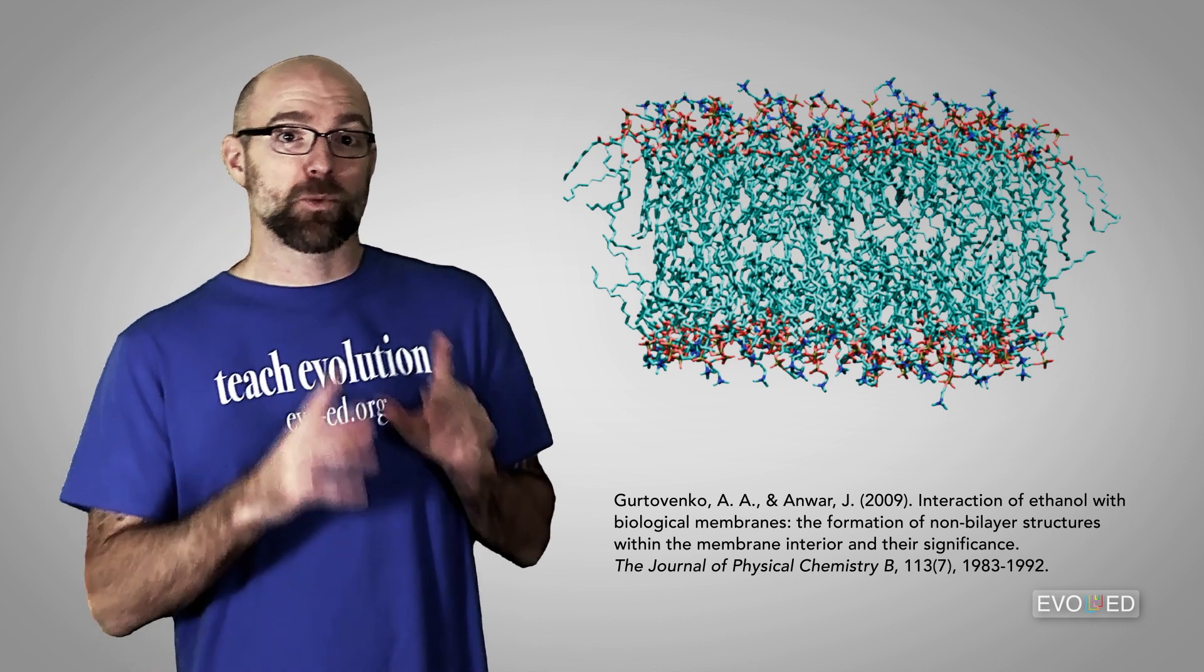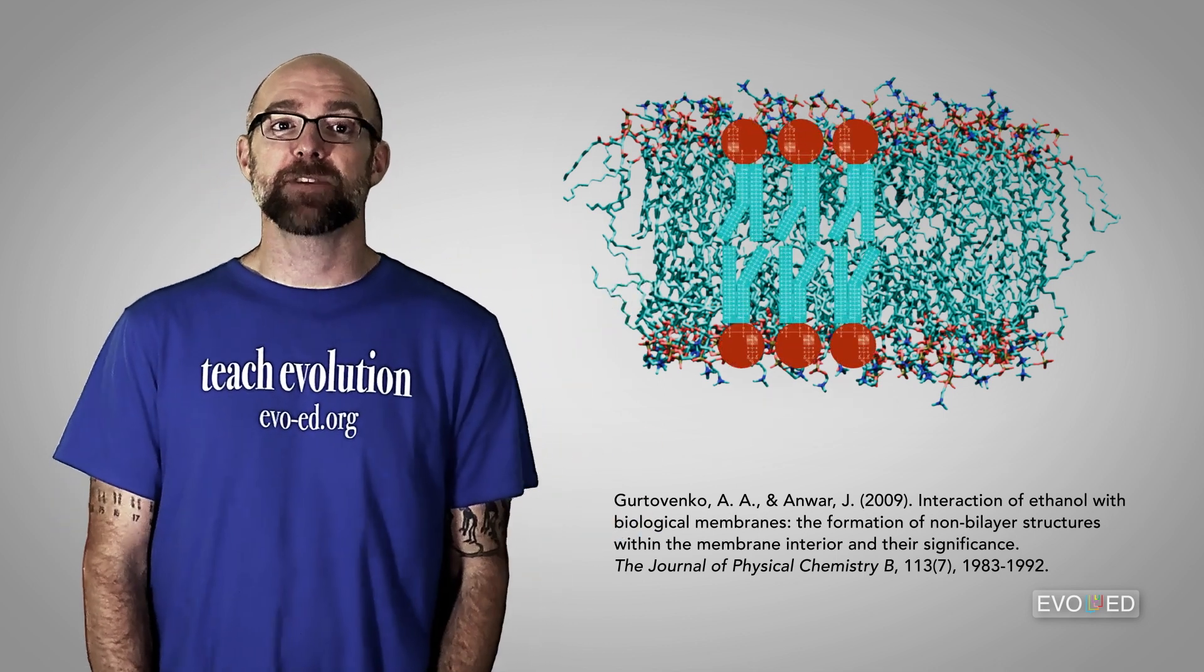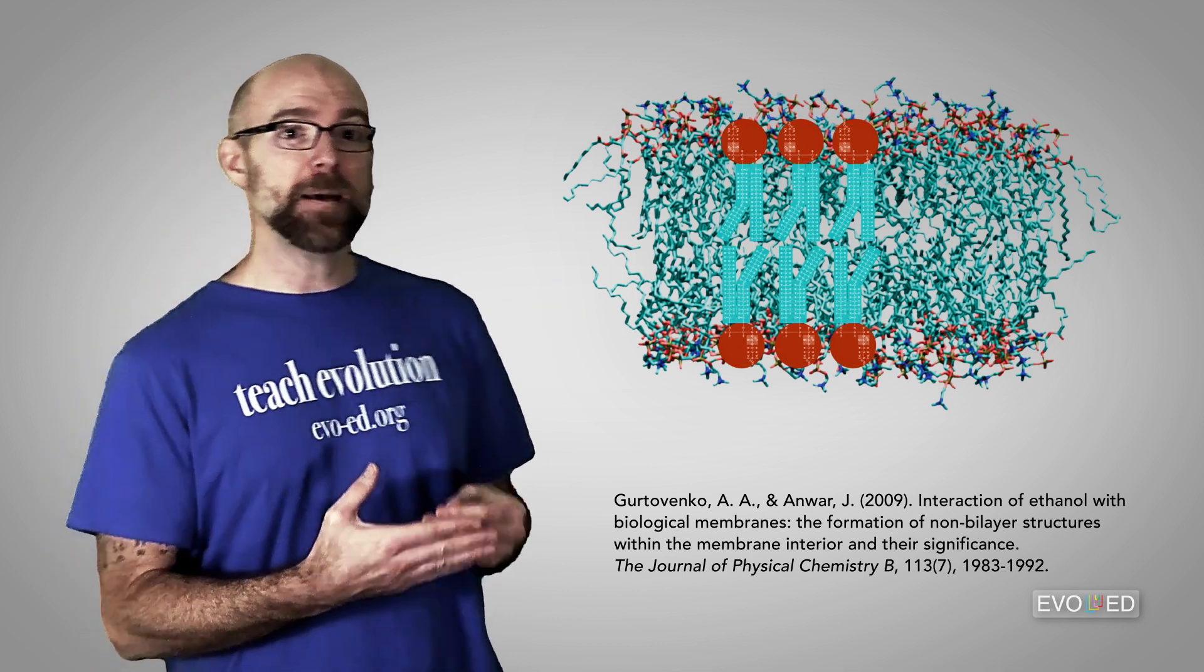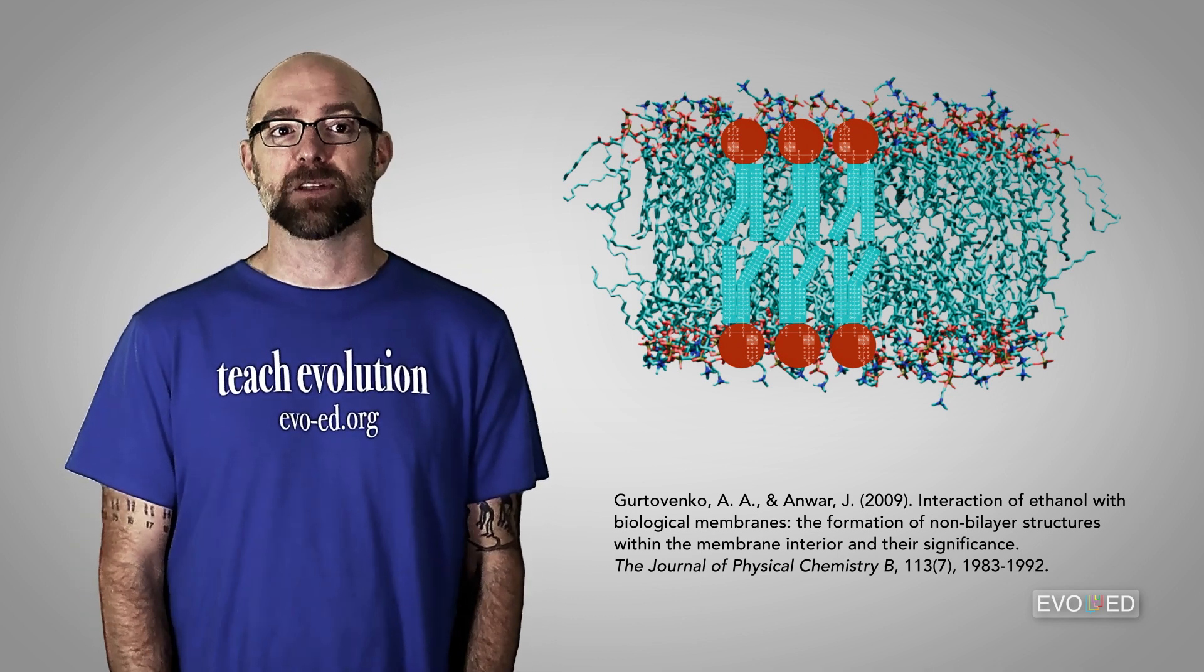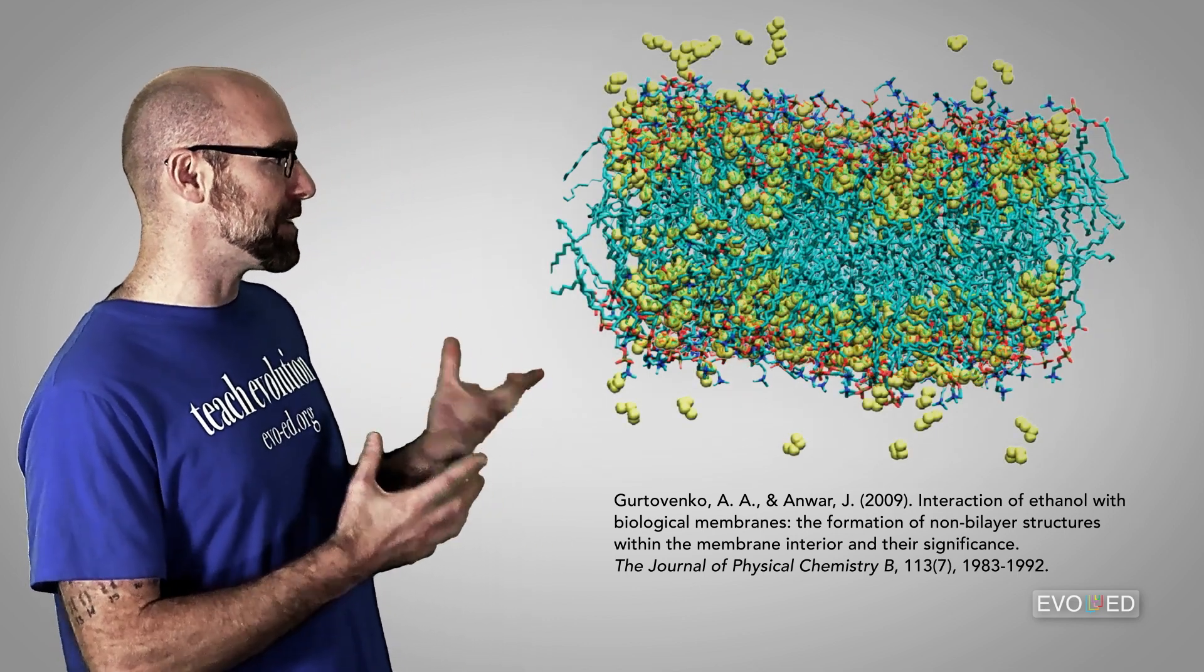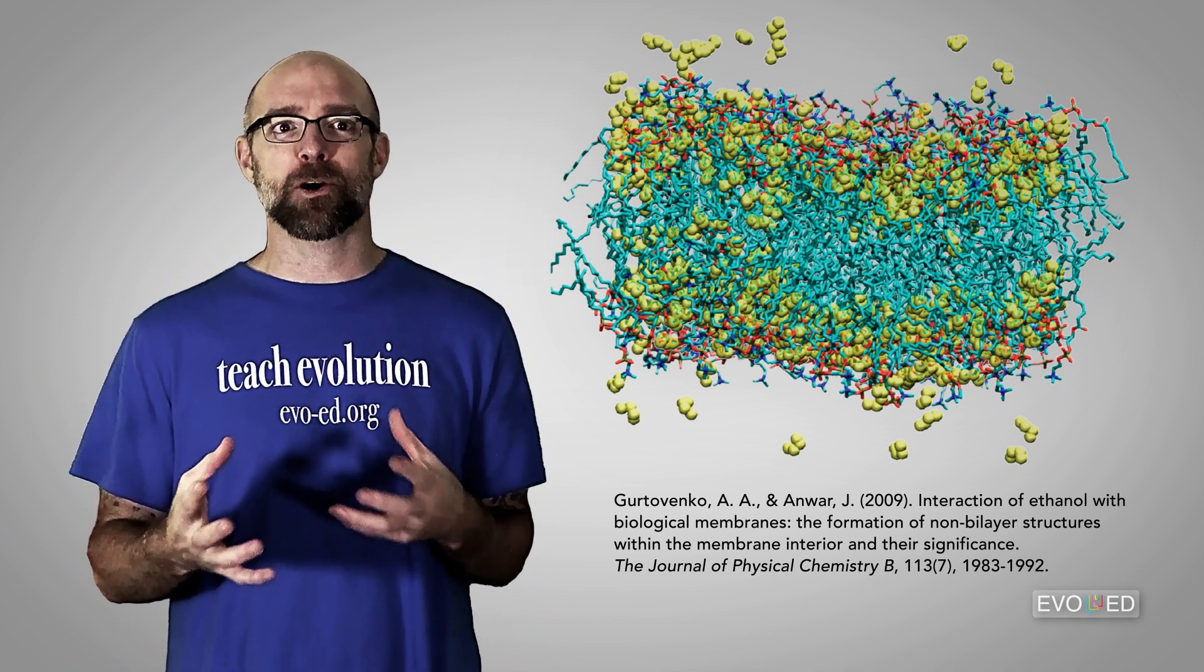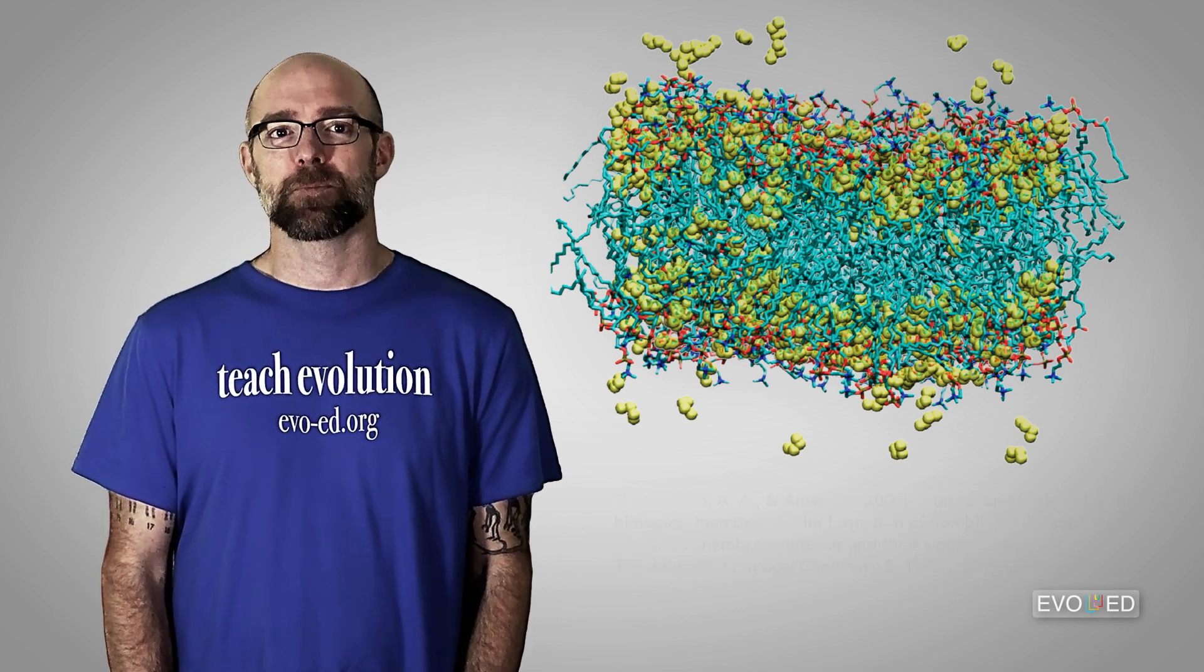Okay, the red parts at the top and at the bottom, those are the hydrophilic head groups of those phospholipids. And the teal parts in the middle, those would be the hydrophobic tails of the phospholipids. Now, if we put some ethanol in here, and that'll be shown in sort of a yellowish color, you can see that the ethanol can essentially permeate right into the middle of that membrane.